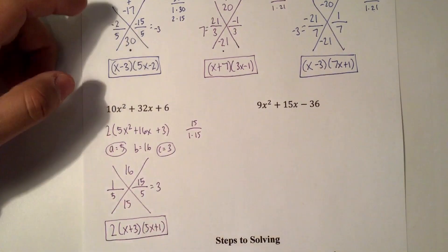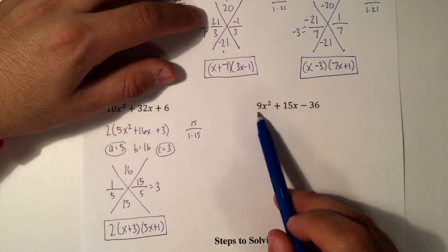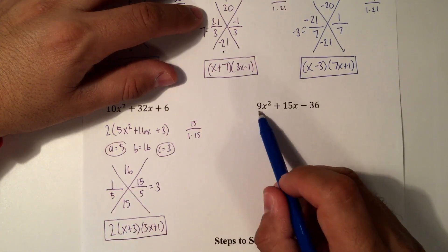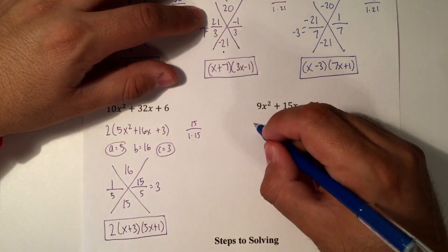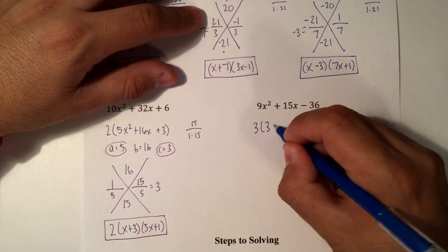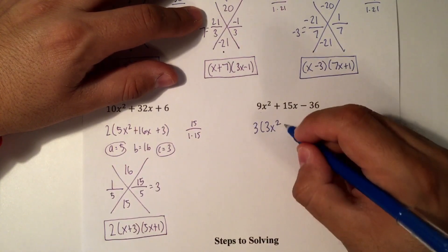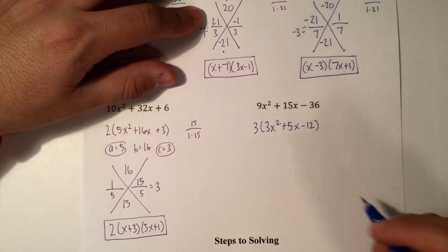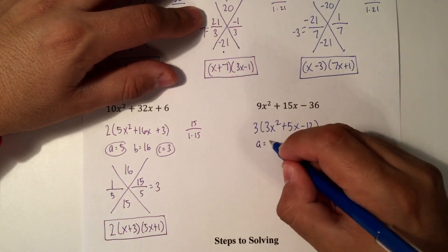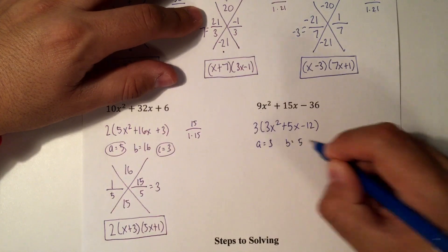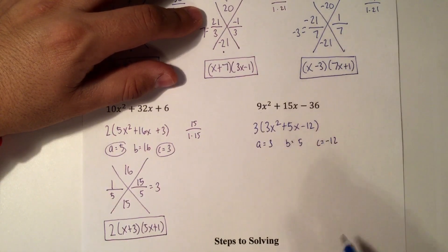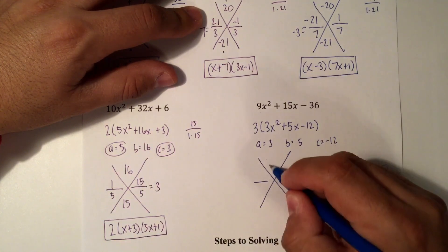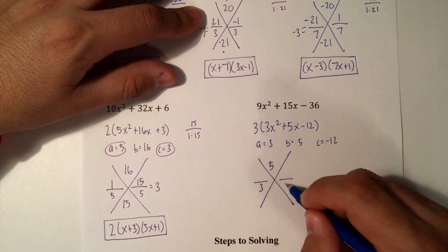And for the last example here. Standard form, yes. GCF, yes. They're all divisible by 3. So 3 times 3x squared is 9x squared. 3 times 5x is 15x. And 3 times negative 12 is 36. Let's identify A, B, and C. So B on the top is 5. Divide by A is 3. And then A times C is negative 36.